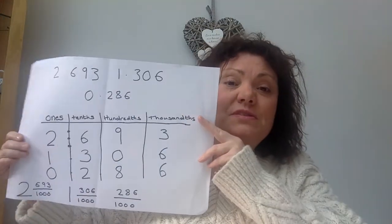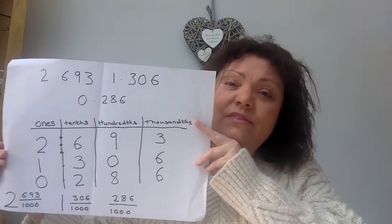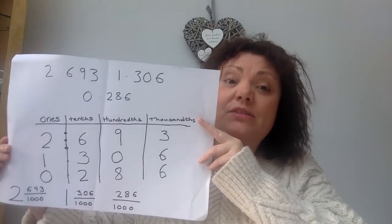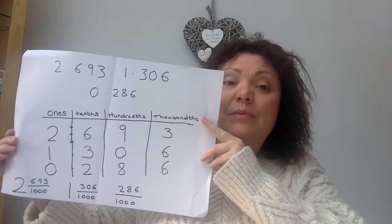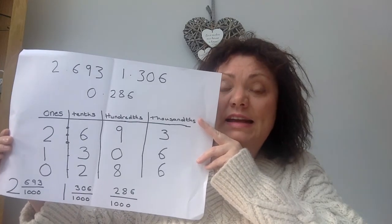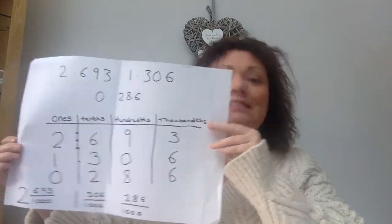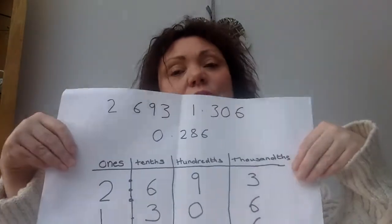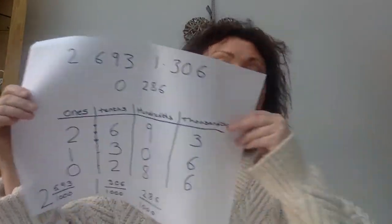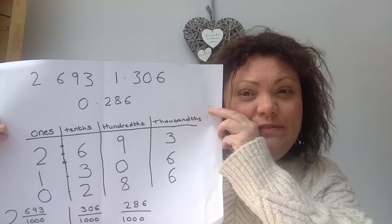And then we've got 0.286. We haven't got a whole there, so we put zero point, and we've got two tenths, eight hundredths, and six thousandths. When you look at it on the place value chart, it really makes it clear for you.